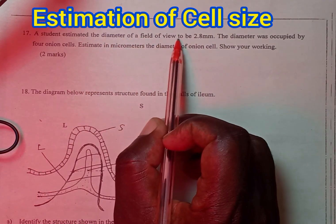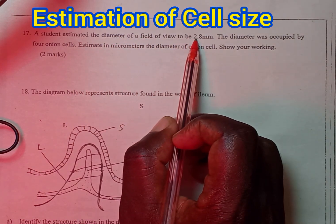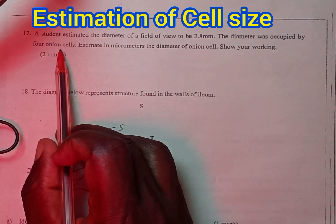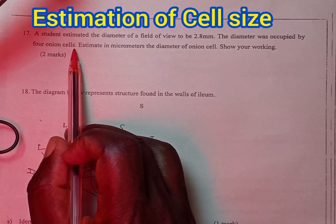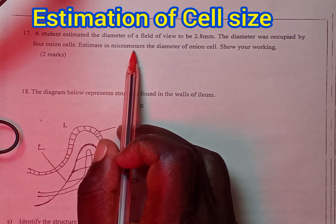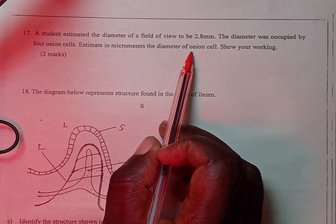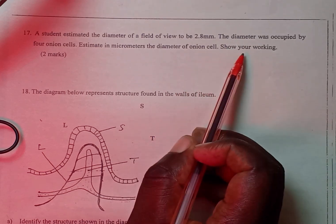diameter of a field of view to be 2.8 millimeters. The diameter was occupied by four onion cells. Estimate in micrometers the diameter of onion cell. Show your working.